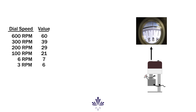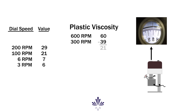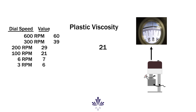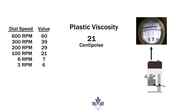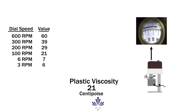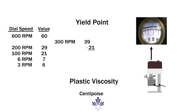The dial readouts can then be used to generate common viscosity measurements, such as plastic viscosity, measured by subtracting the 600 RPM readout from the 300 RPM readout. Plastic viscosity is a function of the amount of mechanical friction within the fluid, often related to the amount of solids present. The yield point, which is the second component of a fluid's resistance to flow, is related to the attractive forces at play in a fluid. It can be calculated by subtracting the plastic viscosity value from the 300 RPM readout.